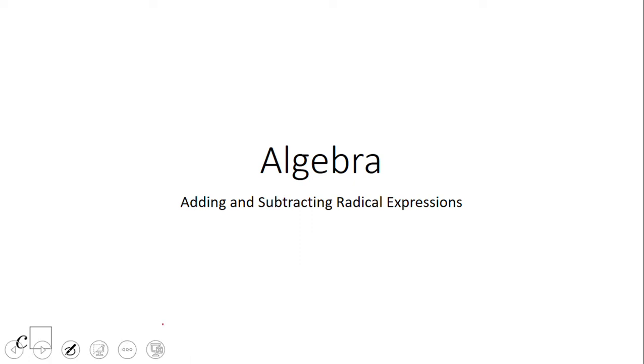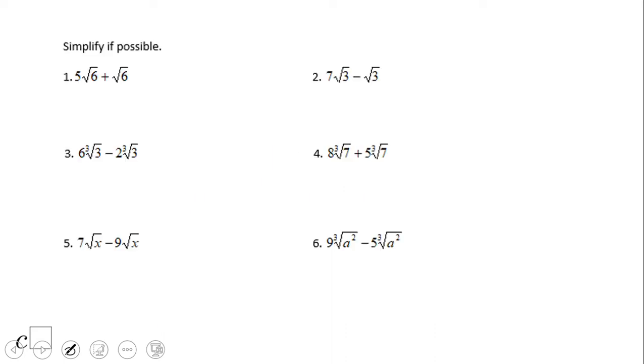Welcome or welcome back on C-Square. In this video clip, we're going to talk about adding and subtracting radical expressions. We're going to start with some easy type of problem. Here we have 5√6 + √6, that will be 6√6.